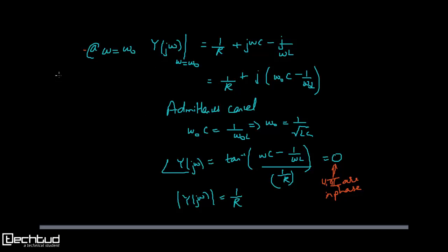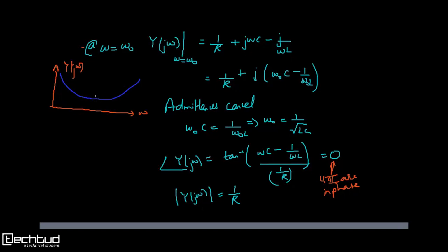The plot of |Y(jω)| versus ω shows the admittance going to infinity at both extremes, with a minimum value of 1/R at ω = ω₀.